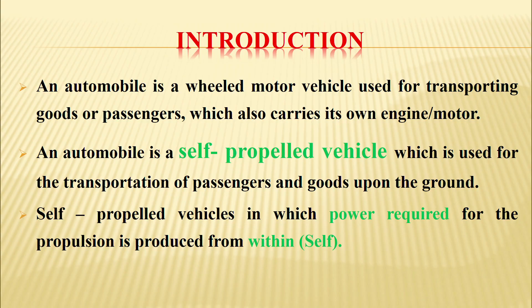In the introduction, an automobile is a wheeled motor vehicle used for transporting goods or passengers, which carries its own engine or motor. It is also known as a self-propelled vehicle used for transportation of passengers and goods on the ground. Self-propelled means the power required for propulsion is produced from within the engine, not outside.